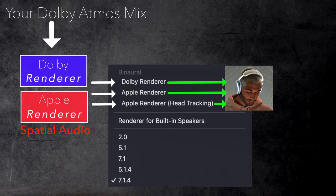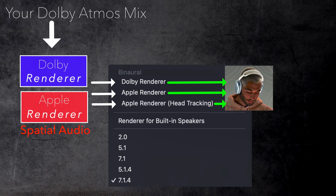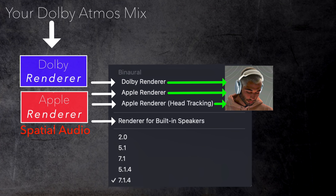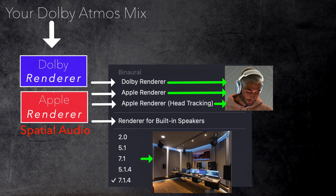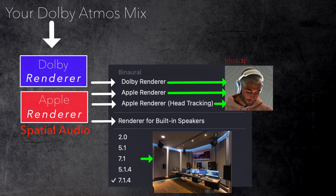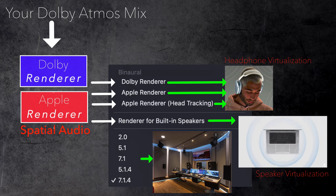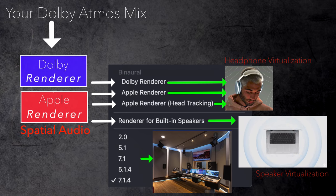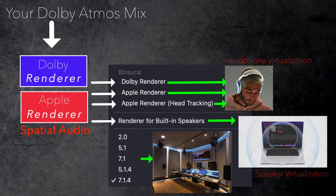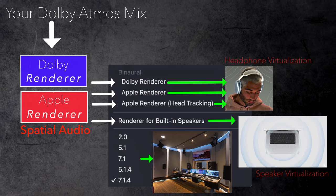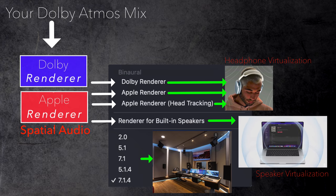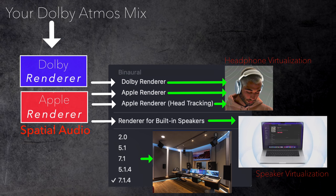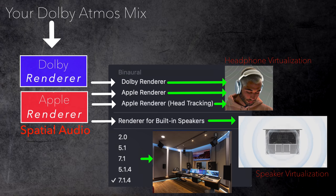The fourth option, Renderer for Built-in Speakers, is placed separately between divider lines because it doesn't belong to the binaural renderer engine above or the dedicated speaker renderer below. Apple Spatial Audio technology has two components: headphone virtualization and speaker virtualization. Any audio signal — stereo, conventional surround like 5.1 or 7.1, and now also a Dolby Atmos mix — can be used as a source, and the virtualization creates an immersive sound experience either through headphones or built-in speakers on newer iPhones, iPads, or Apple computers. If you are on a supported Mac, you can enable this option and Logic will play back your Atmos mix using the speaker virtualization of its Spatial Audio technology.